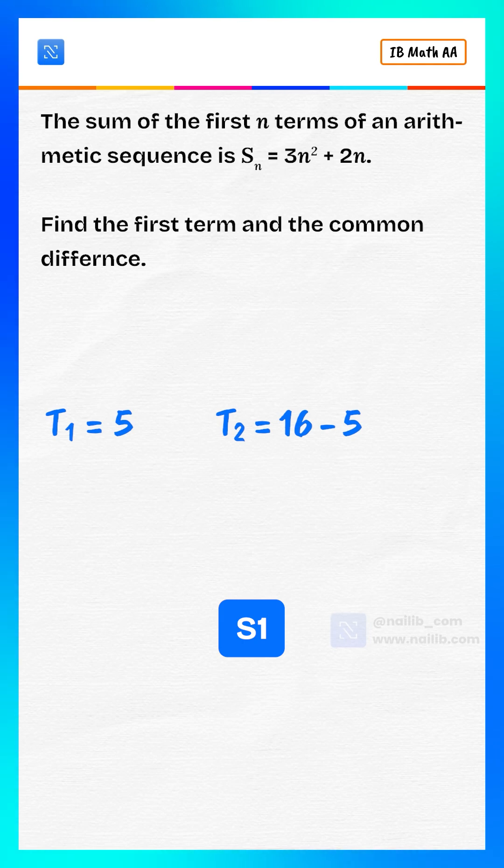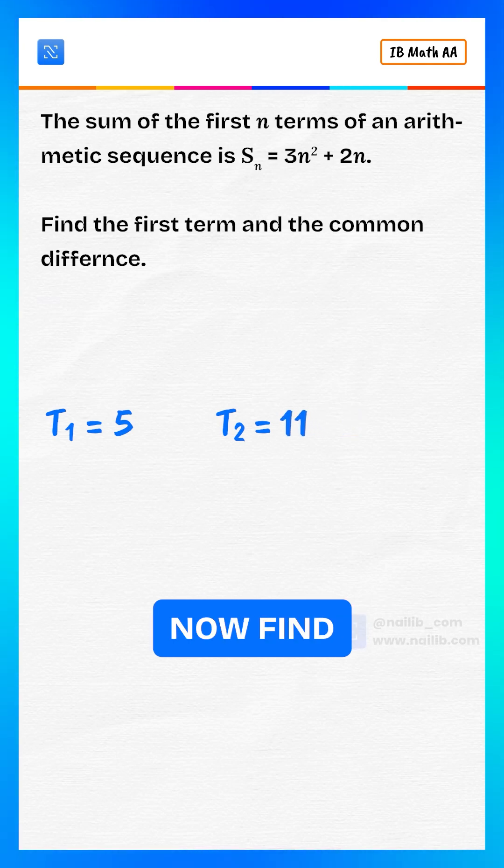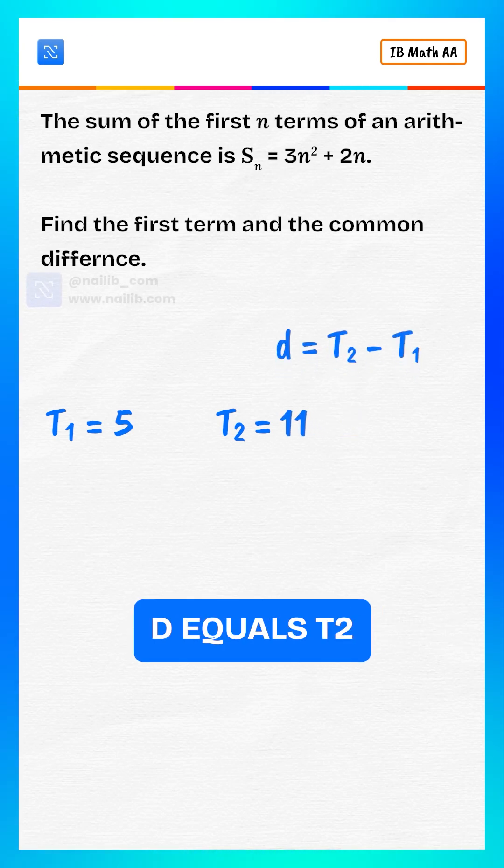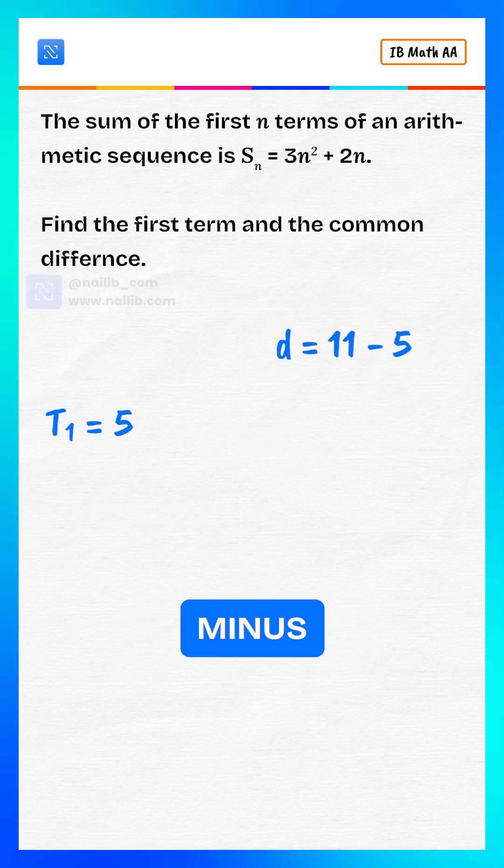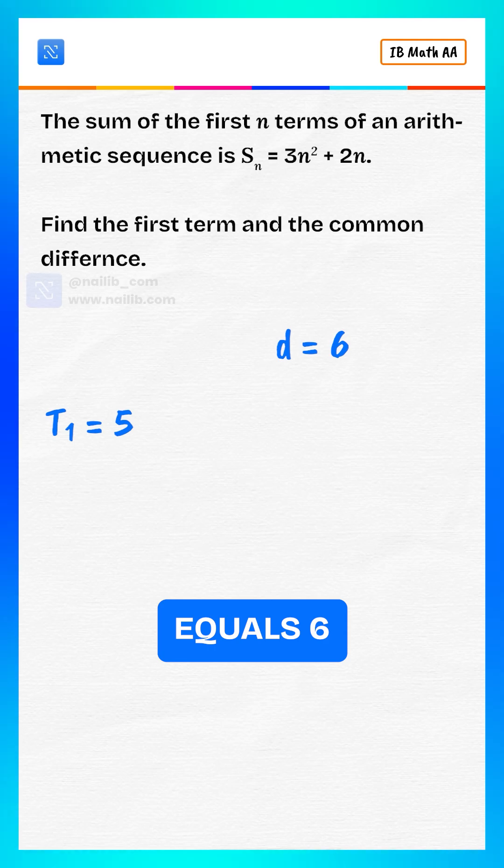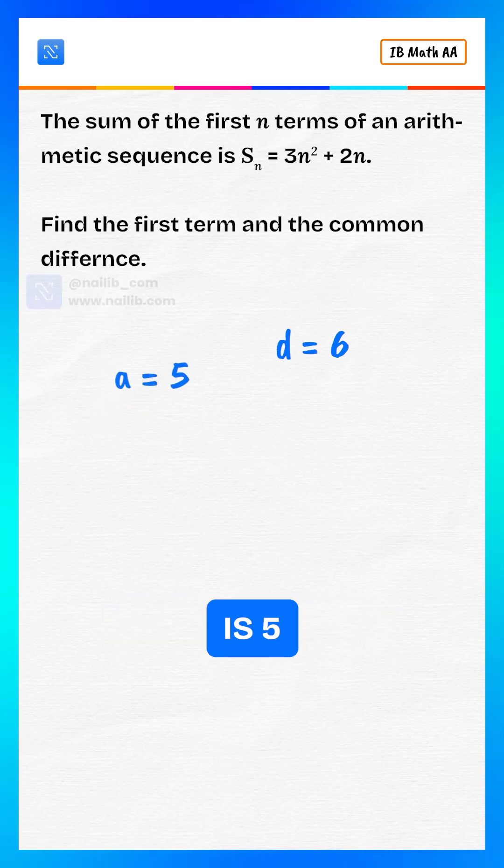That's 3 times 4 plus 4, which equals 16. Now subtract S1, that is 11. Now find the common difference. D equals T2 minus T1, which is 11 minus 5 equals 6. So the first term is 5 and common difference is 6.